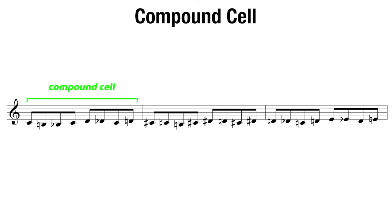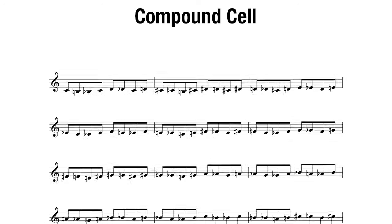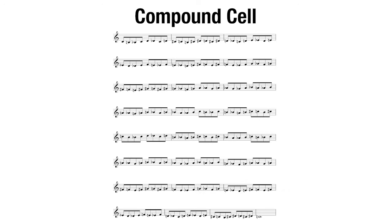That first four-note compound cell we worked on was: 1, major 7, flat 7, 1. Now we're going into another melodic cell which, keeping in that same key, would be: 2, flat 2, 1, 2. I'm thinking about that first example in the key of C7, C minor, or C major. Just like with that first melodic cell, we want to try and put this through all 12 keys, ascending and descending, as written in our PDF. And like playing the melodic cells over a 2-5-1, we can take these compound cells and play them over different progressions.